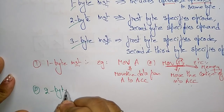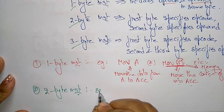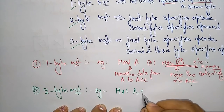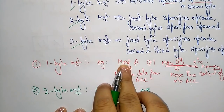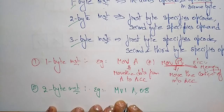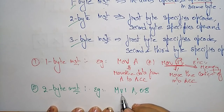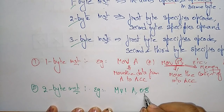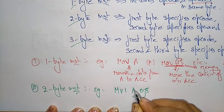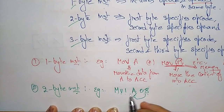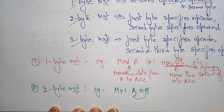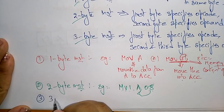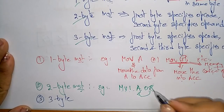Next, two-byte instructions. Example: MVI A, 08. Why does the 8085 microprocessor use this type of instruction instead of MOV? MVI means move immediate data. Immediate data means the data is already entered here — it is an immediate data — and that data will be moved to the A register. So: move immediate data to the A register. This is a two-byte instruction because this is one byte and this is another byte.